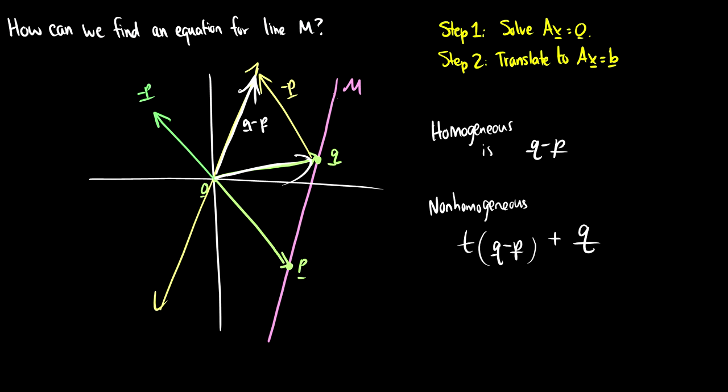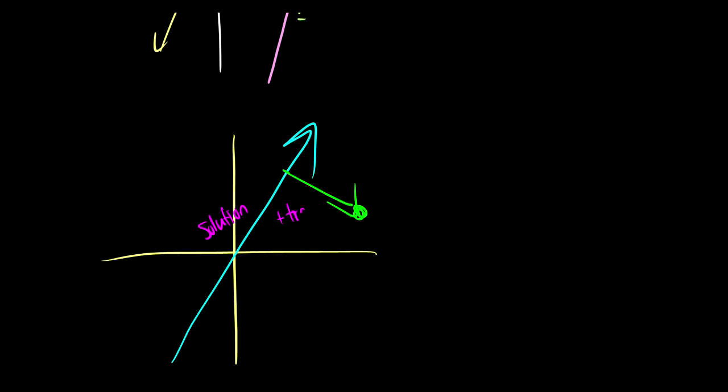So what we did here, and I'll draw a picture again, we found the solution to ax equals zero. So it looked like this. And then we had this vector that shifted it over to this point. So we took this solution, the homogeneous, and then we added the translation.